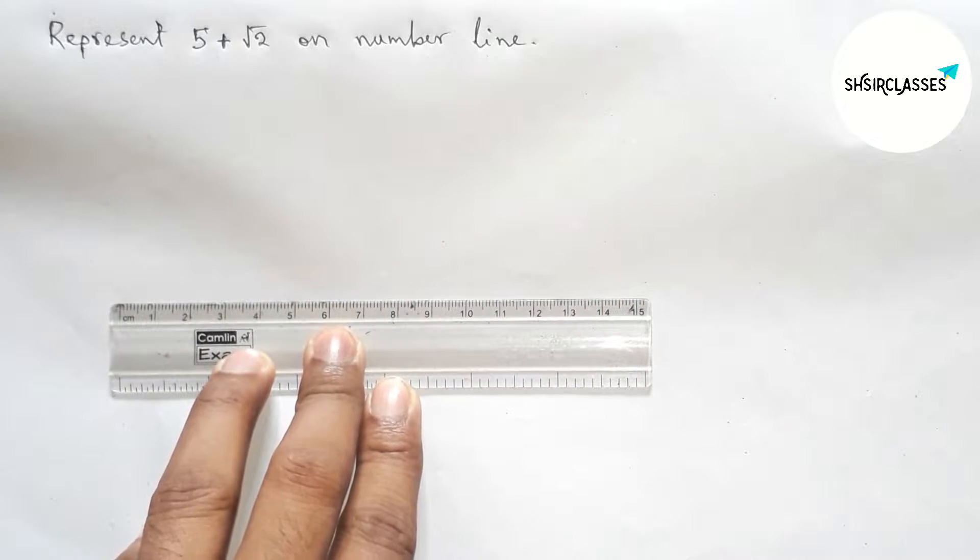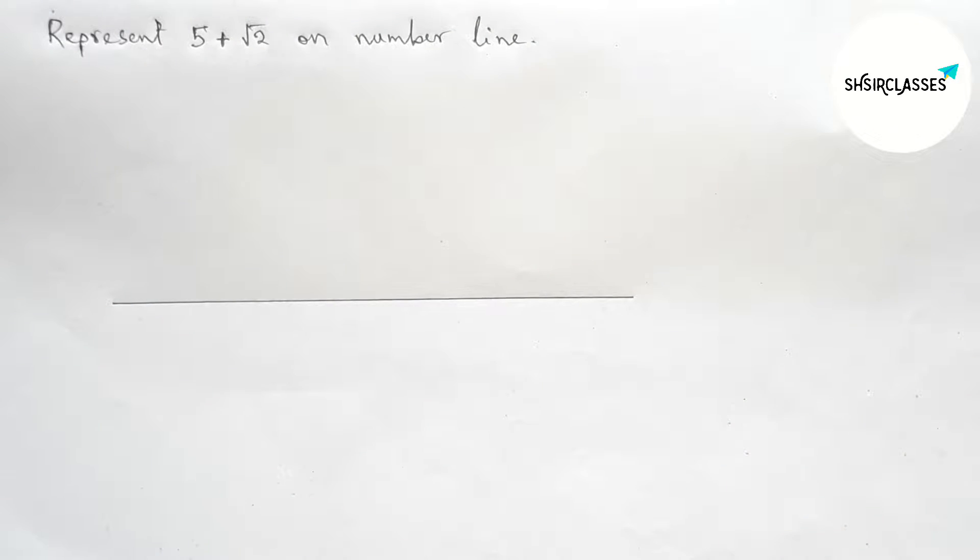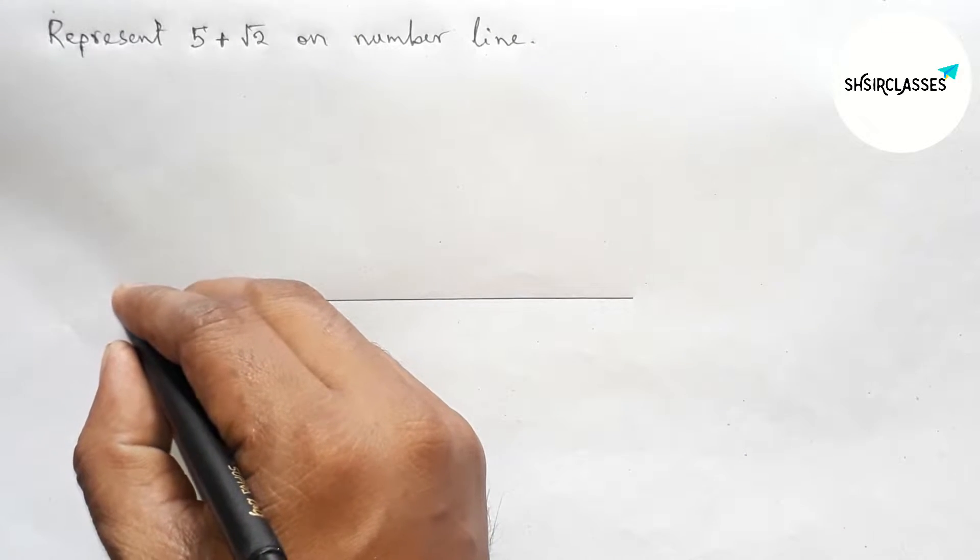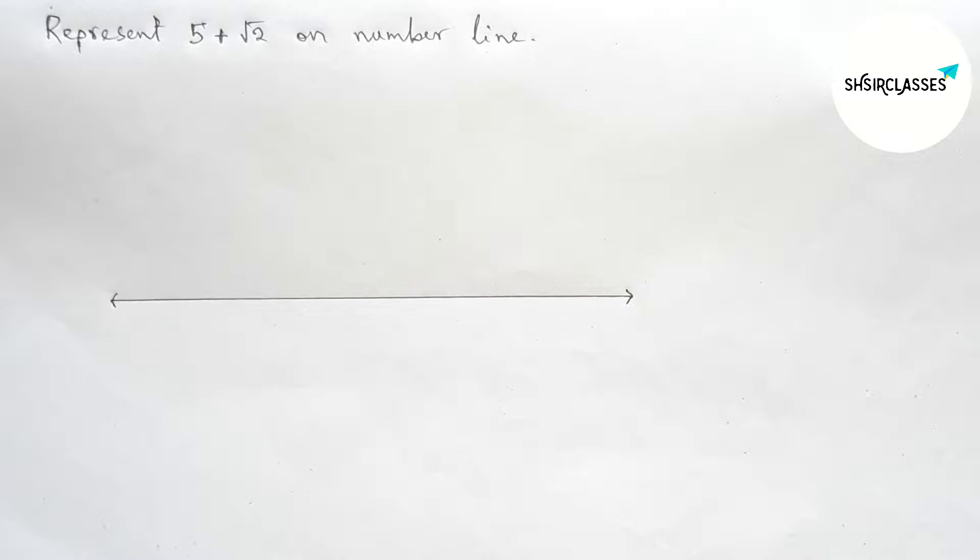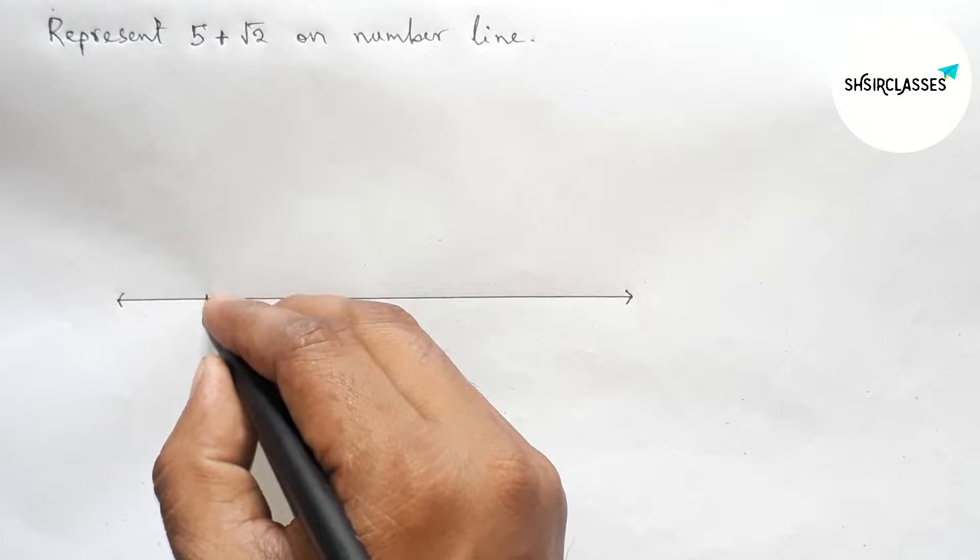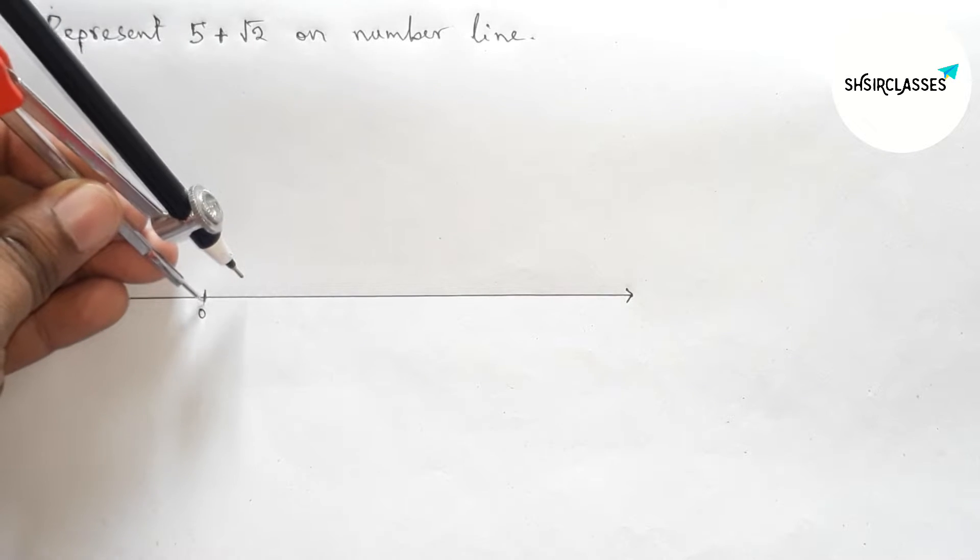First of all, let us draw a number line. So first drawing here a line segment of any length and taking arrow marks on both sides. Next marking here number zero.